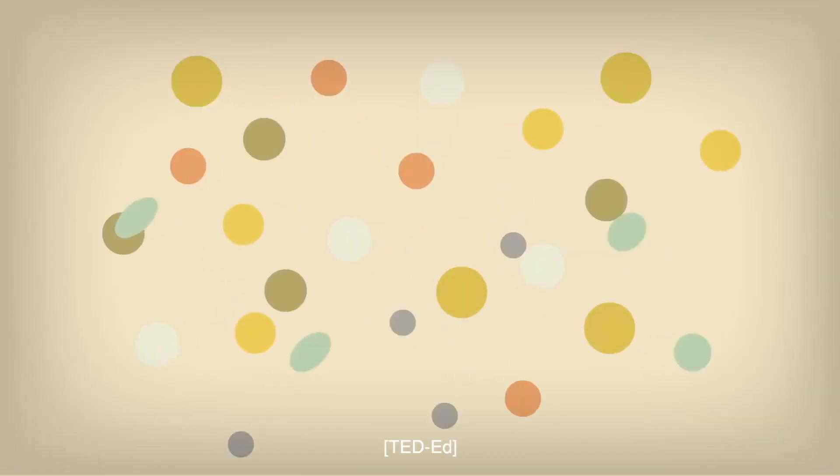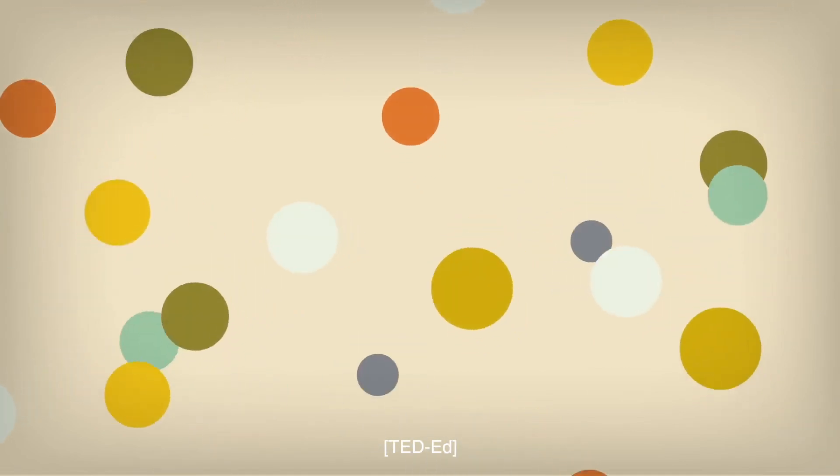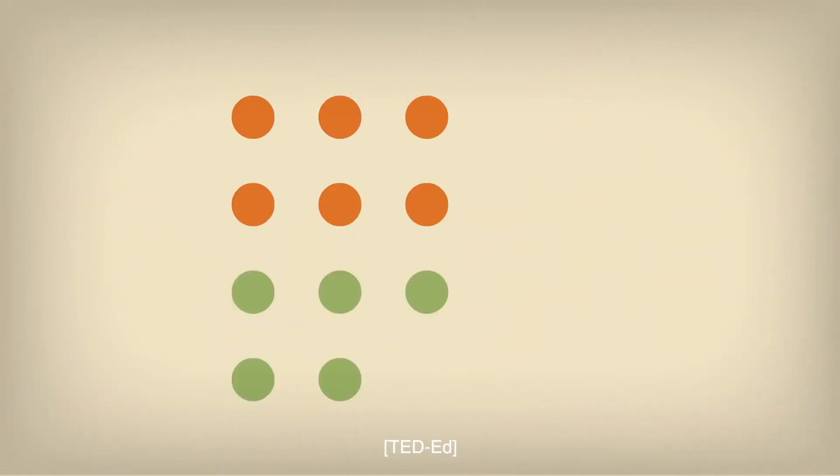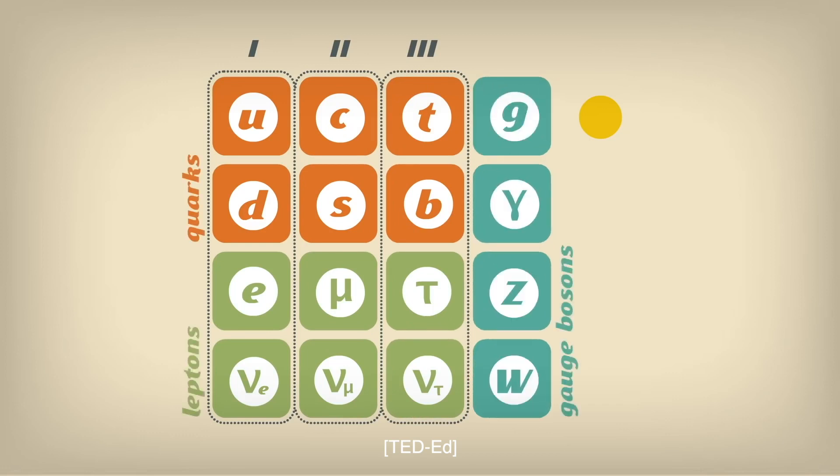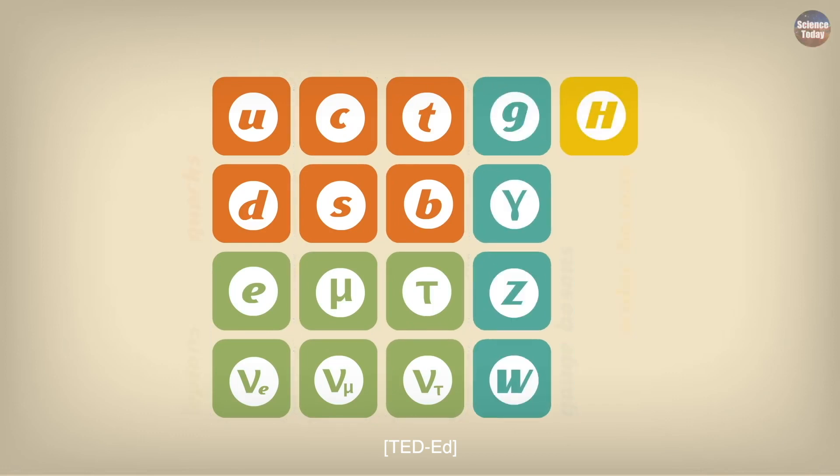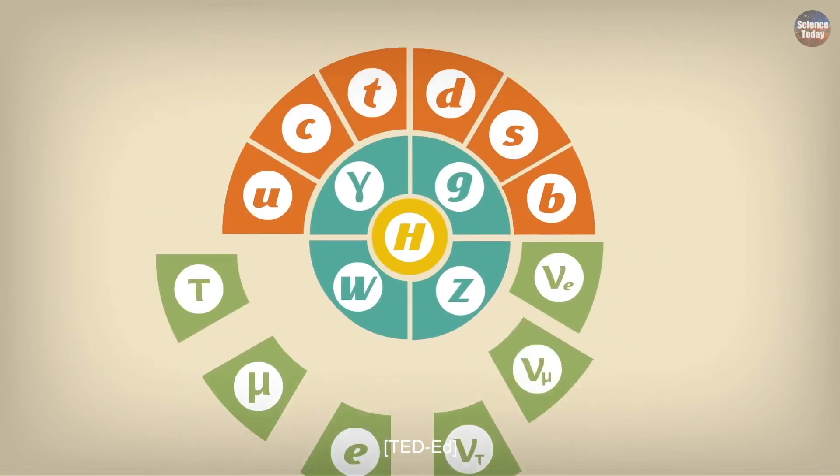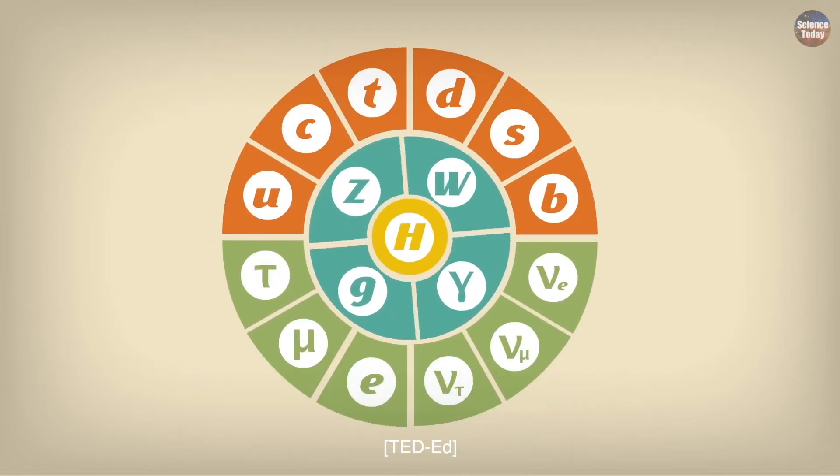As we delve into the subatomic world, we find a zoo of particles like electrons, quarks, and neutrinos. These particles interact by exchanging other particles like photons for the electromagnetic force. The standard model is our best description of the quantum world.